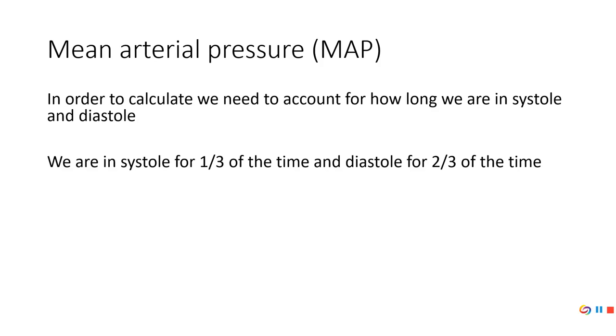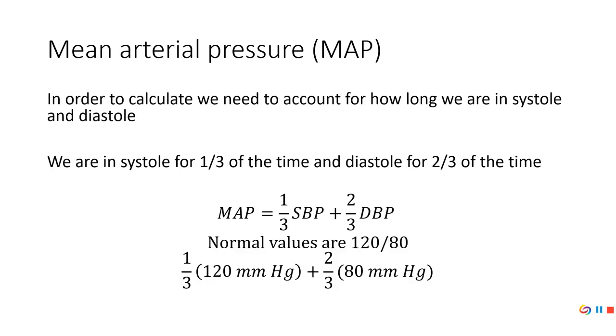Then we've got mean arterial pressure. Mean arterial pressure is just what it says—what's the average pressure in the arteries? This has nothing to do with the heart. I mean, the heart does contribute to systolic blood pressure, but we're worried about the pressure in the arteries, and so it's just a weighted average. You have to remember, like we talked about with Wiggers, that we're in systole for a third of the time and diastole for two-thirds of the time, and so as a result, we just take one-third systolic plus two-thirds diastolic. So, if we use those typical values of 120 over 80, we end up with a mean arterial pressure of about 93.